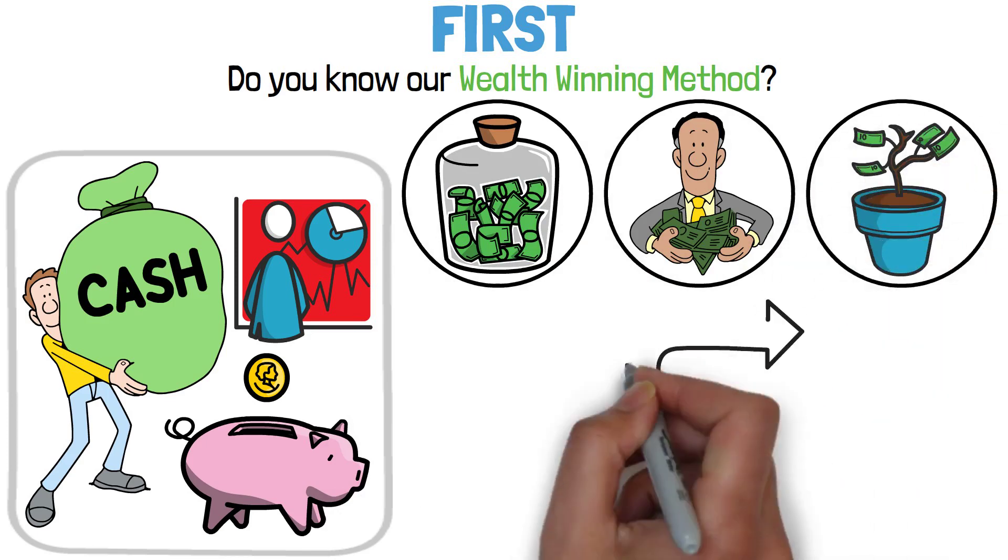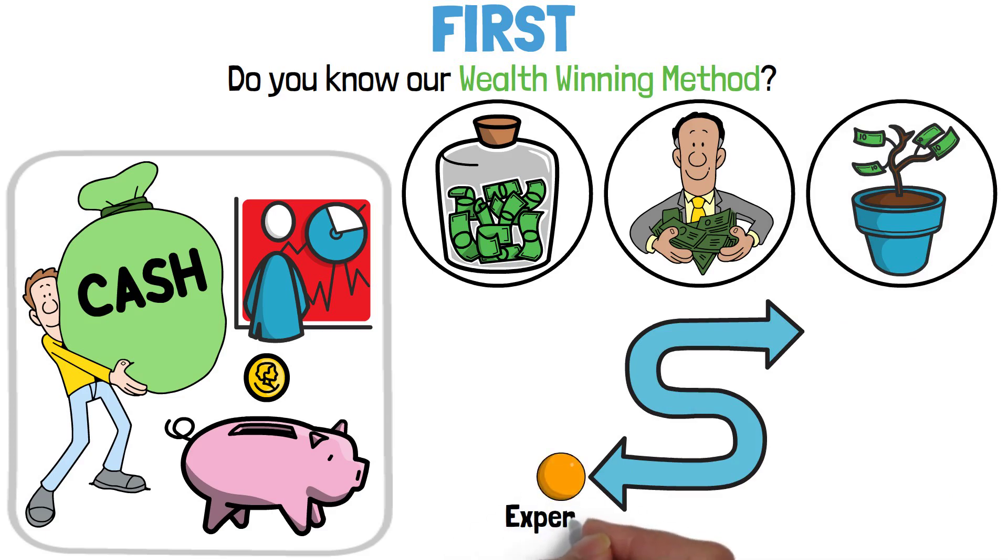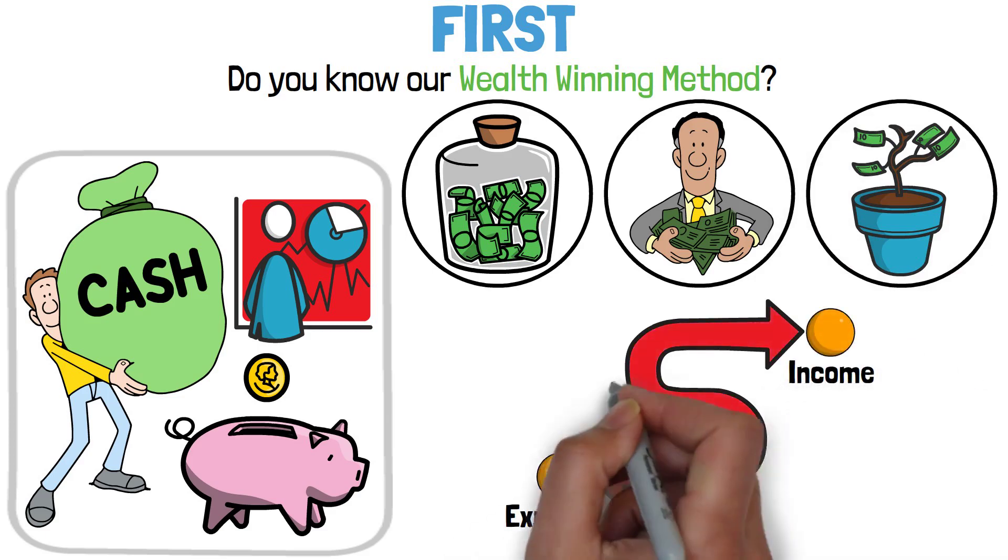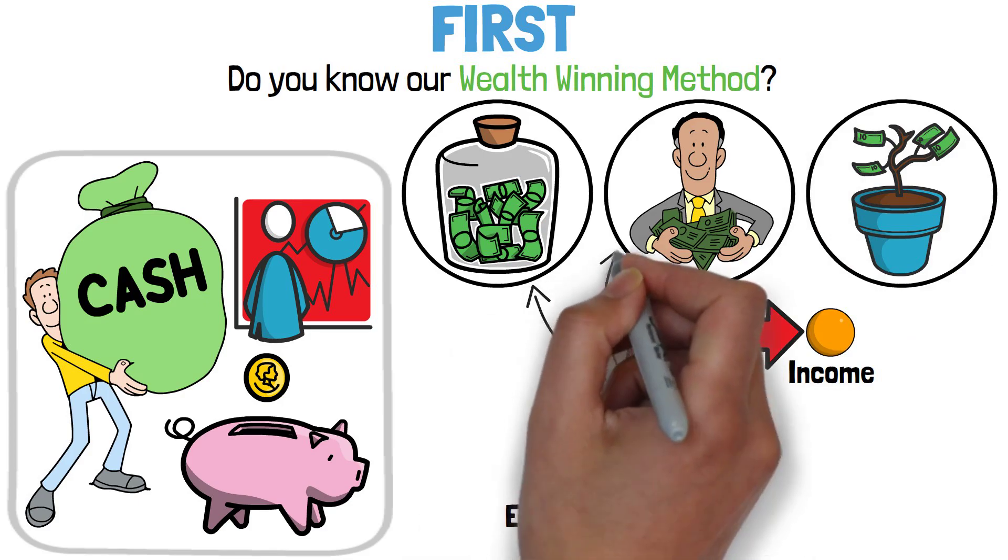It's all about increasing the spread between the first point, which is your expenses, and the second point, which is your income. And you can do that by either trying to save more money or trying to earn more money.